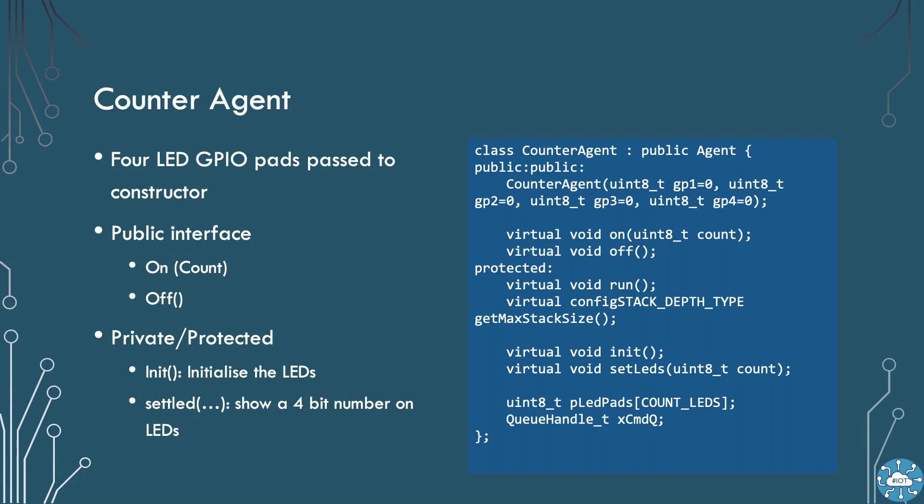On, if you pass zero to it, will do the same thing as off. These functions capture the request in a queue, which is then read by the run method. On the protected side of the interface, we add an initialization function to set things up. Then an internal work function to take an LED pattern and instantly apply it to the LEDs. We hold a queue handle and the pad definition as part of the object.